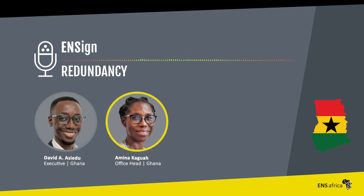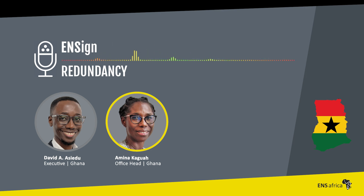Redundancy occurs in two scenarios under Ghanaian law. The first scenario is where an employer undertakes internal restructuring or introduces changes in its business operations which lead to employees being terminated. We say a redundancy has occurred. We can call that redundancy type one.